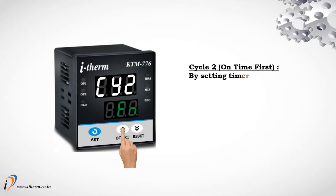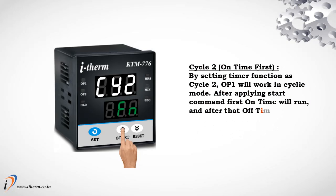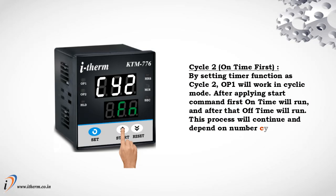Cycle 2 — on time first. By setting timer function as Cycle 2, Output 1 will work in cyclic mode. After applying start command, first the on time will run, and after that the off time will run. This process will continue depending on the number of cycles parameter in the user list.